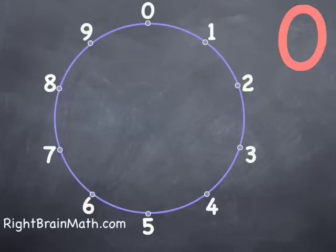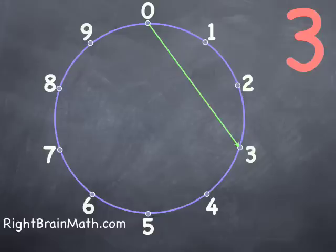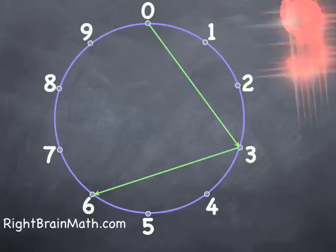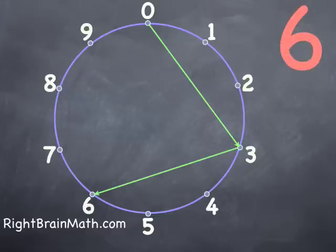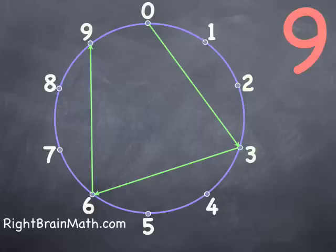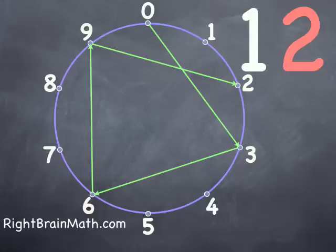Here is our number wheel. We start from zero and go to three. When we add three, we go to six. Add three again and we're at nine. Add three another time and we're at twelve. Notice that the last number is two and we're only focusing on the orange numbers, the ones digits, to create the pattern.